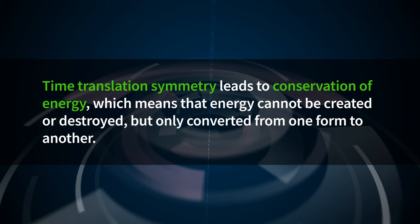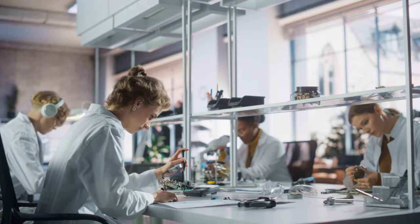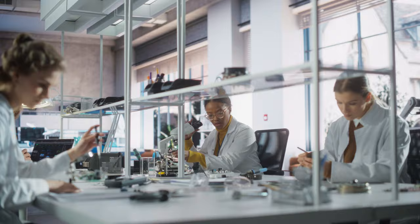By Noether's theorem, we know that time translation symmetry has some associated conserved quantity, and it turns out that it is in fact a familiar one. Time translation symmetry leads to conservation of energy, which means that energy cannot be created or destroyed, but only converted from one form to another. This law is used in almost every area of physics. Another interesting example of Noether's theorem in action is space translation symmetry, which means that the laws of physics remain the same regardless of position. This is why you can conduct experiments in the labs at your school and expect to use the same laws of physics as scientists use across the globe.